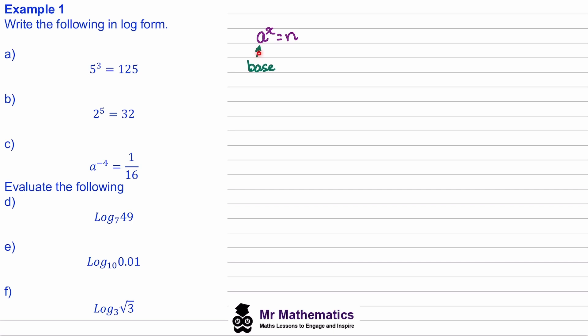This a term becomes the base of our log, and this x term is our power. Expressing this using logs, we say the logarithm of n to the base of a is equal to x. So for instance, if we have three squared is equal to nine, we'll say the log of nine to the base of three is the power of two.